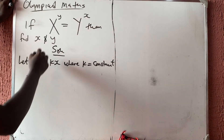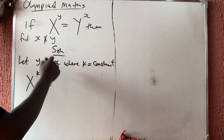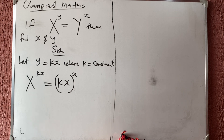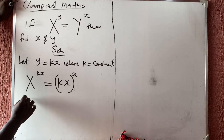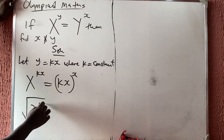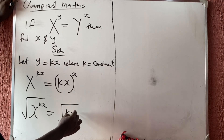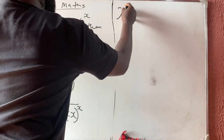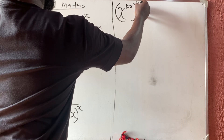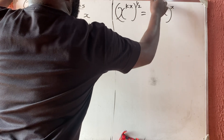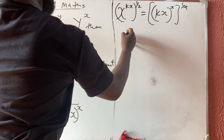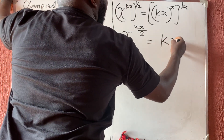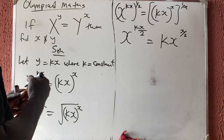So substituting, instead of writing y we write kx. This gives x raised to the power kx is equal to kx raised to the power x. Now we find the square root of both sides — square root means raised to the power one-half — so we get x raised to the power kx over 2 is equal to kx raised to the power x over 2.